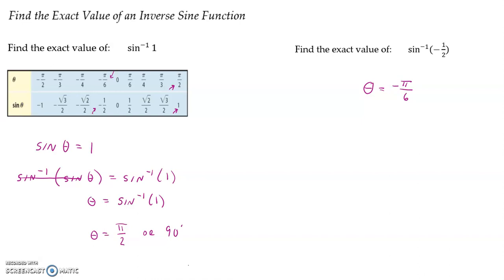If you had typed it into your calculator, inverse sine of negative 1 half, and you had your calculator in degree mode, this would come out to be negative 30 degrees.